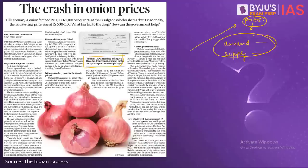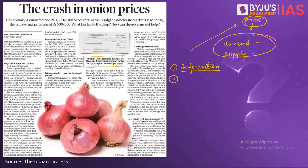In India, most agricultural produce has an inelastic supply because farmers either do not have information about the prices they should get or what product should be sown to reap benefits at harvest. Secondly, many farmers being small and marginal do not have storage facilities, so their agricultural produce is perishable in nature. If they do not sell it in a definite timeframe, it will rot and not be sold. So they have to sell it off as soon as possible, even if the prices they are getting are lower.